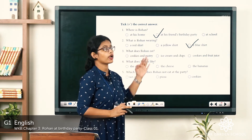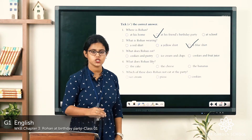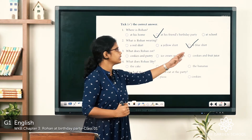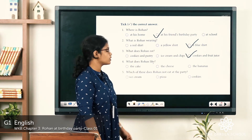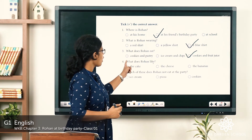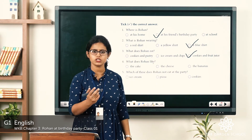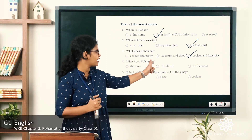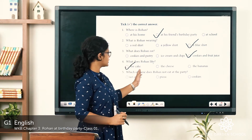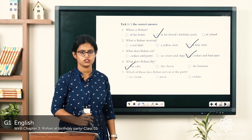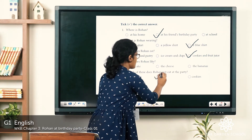Question three: What does Rohan eat? The options are cookies and pastry, ice cream and chips, or cookies and fruit juice. The passage clearly states he eats cookies and fruit juice, so that is the answer. Question four: What does Rohan like? The options are the cake, the cheese, or the bananas — the answer is the cake. Question five: Which of these does Rohan not eat at the party? He doesn't like pizza, so the answer is pizza.